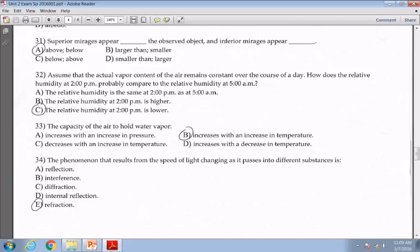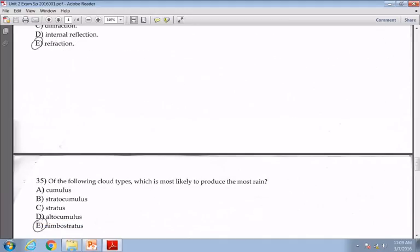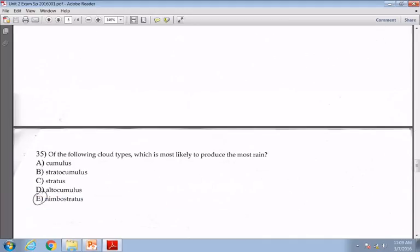Question thirty-three, the capacity of air to hold water vapor, B, will increase. Warm air holds more water vapor with increasing temperature. Question thirty-four, the phenomenon that results from the speed of light changing as it passes through different medium or different substance, we call E, generally refraction. The last multiple choice question, the nimbostratus are the type of clouds that listed there are most likely to produce rain. They don't have cumulonimbus there, so nimbostratus.